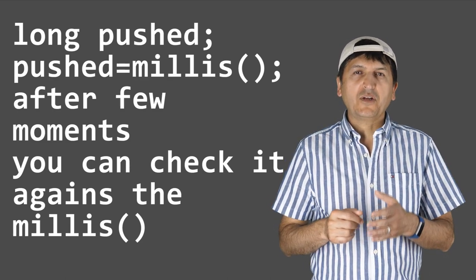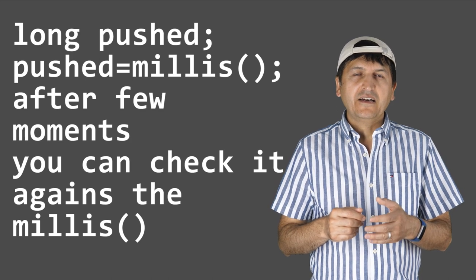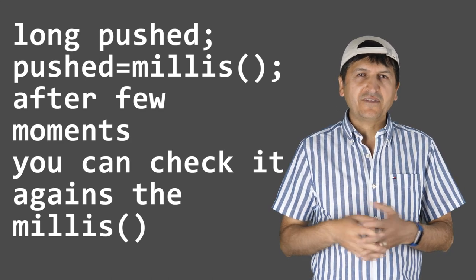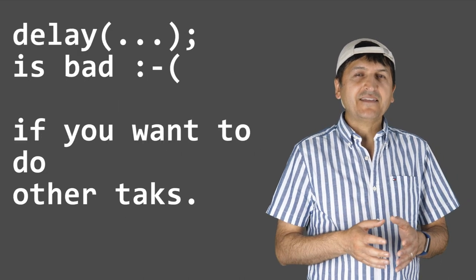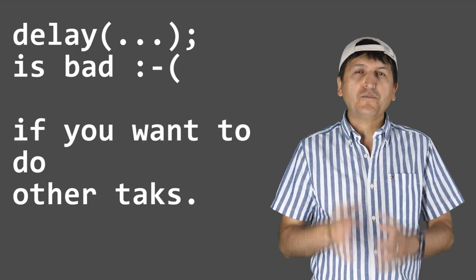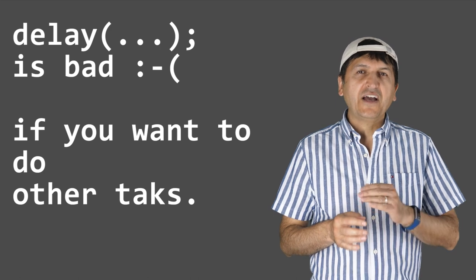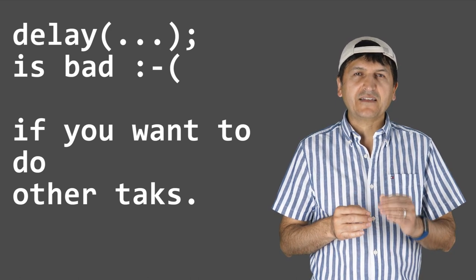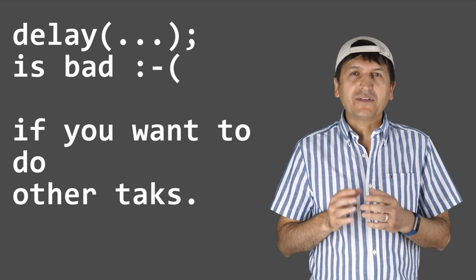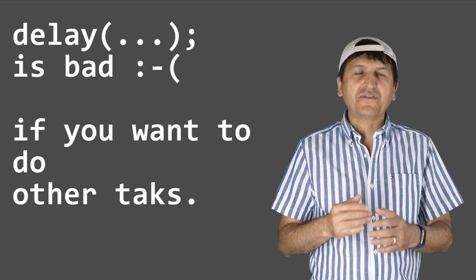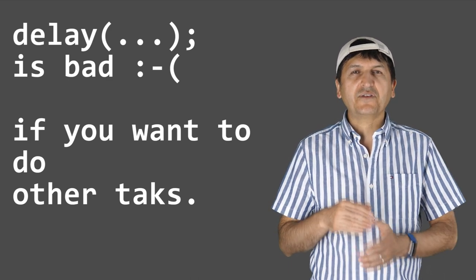Many times people use the delay function — for example, delay(5000) will be a five-second delay. But the problem with delay is that it halts the entire program; everything waits until the delay passes. With millis, it will not interfere with any other features, and you can calculate the time while the rest of the program and all components connected to the Arduino continue to function normally.